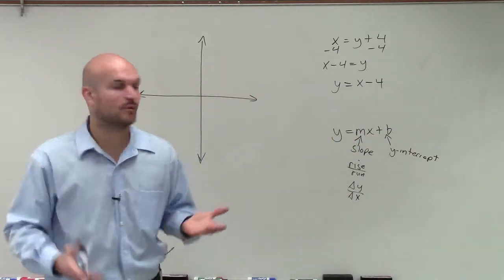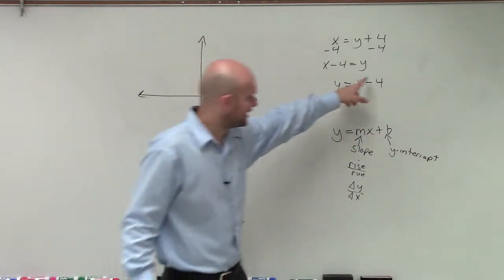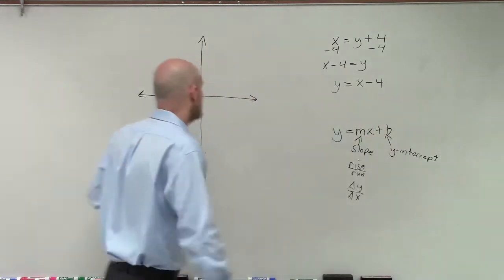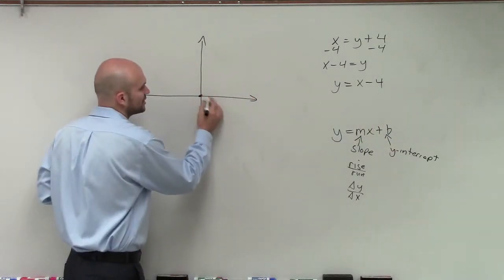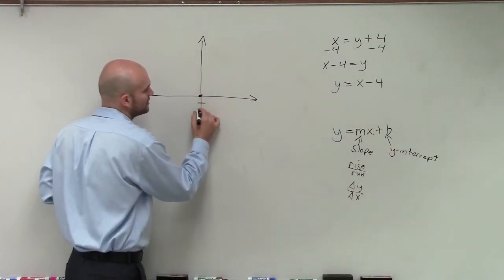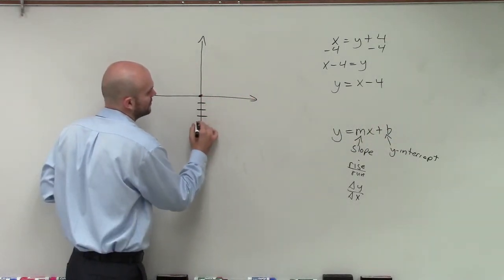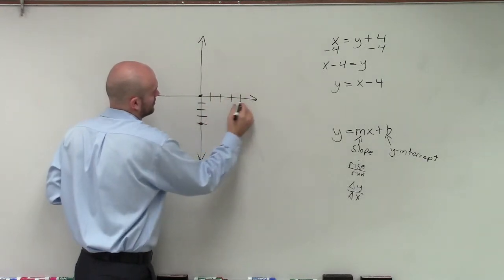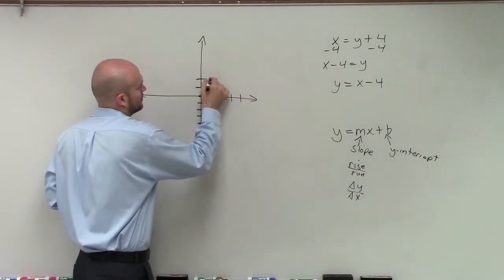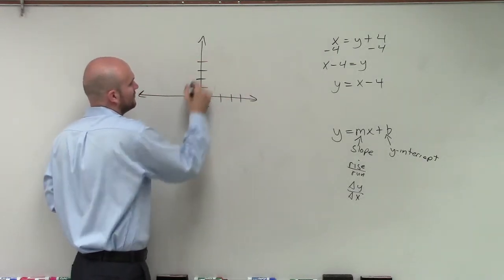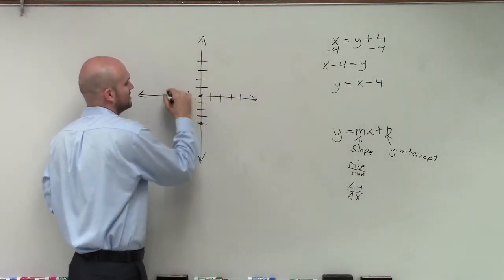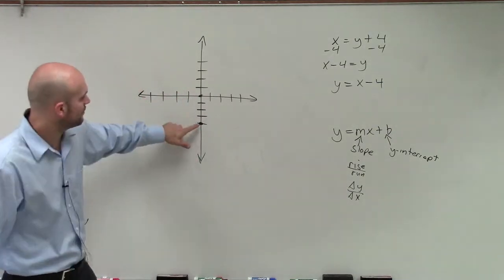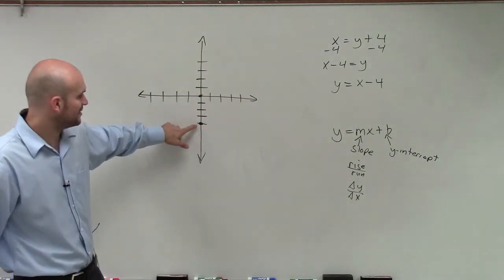Now let's label what we have. We have negative 4 — that's going to be our y-intercept. That means from my origin the graph is going to go down 1, 2, 3, 4. You can see that the graph is going to have a y-intercept at negative 4.